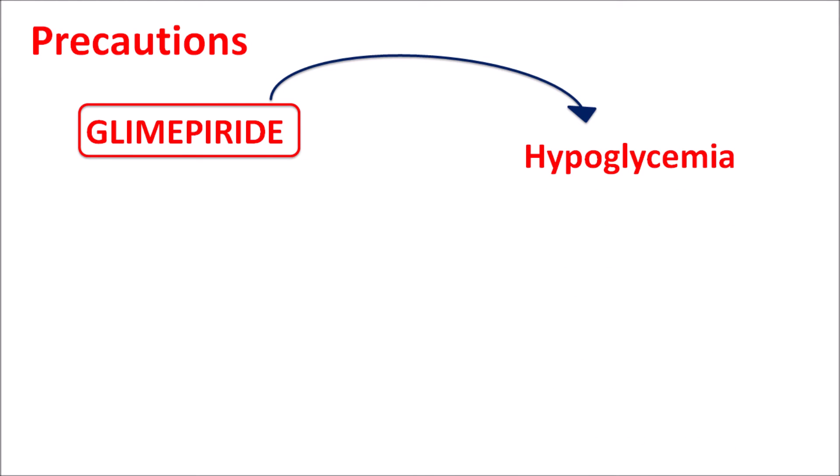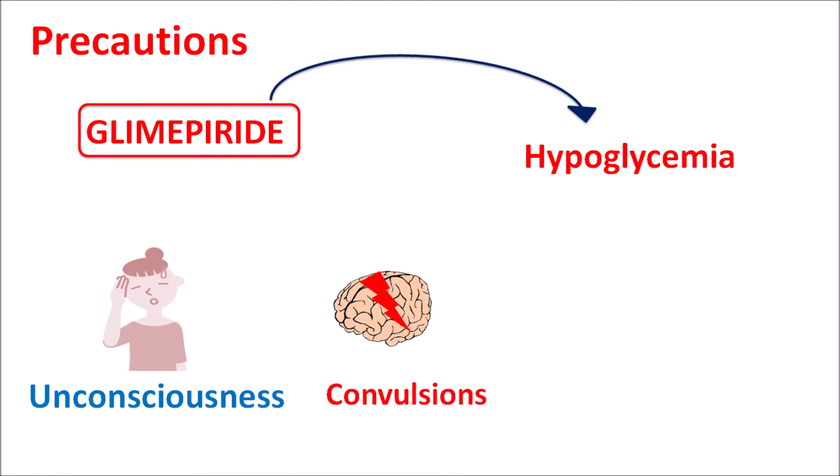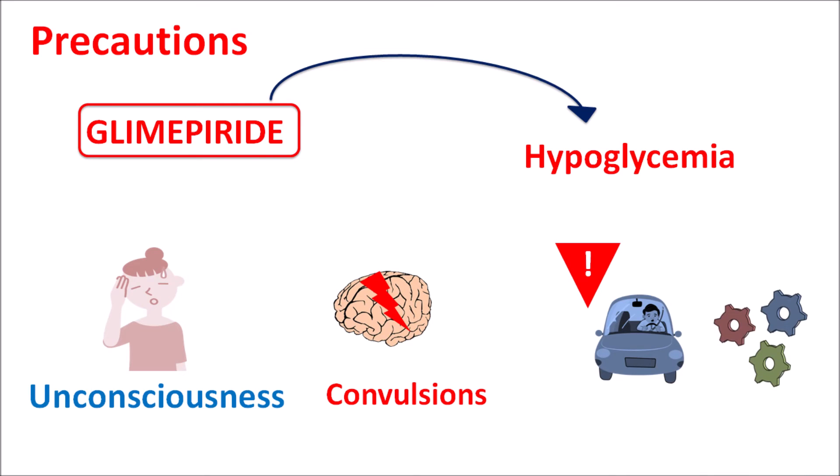Now let us look at the precautions of glimepiride. Since glimepiride acts on the beta cells of pancreas, it can increase insulin release, and by increasing insulin this drug can reduce glucose levels resulting in hypoglycemia. Even as a second generation sulfonylurea, it can still produce some severe hypoglycemia, particularly with increased dose and frequency. Patients may experience unconsciousness, convulsions, and dizziness, which is more pronounced in those with thyroid abnormalities or related disorders. Care should be taken when patients are driving or operating machinery because alertness and function may be reduced.